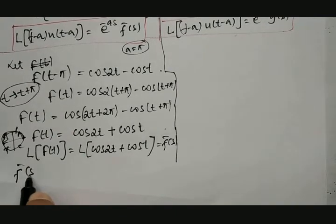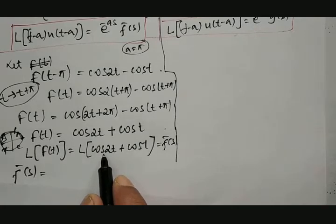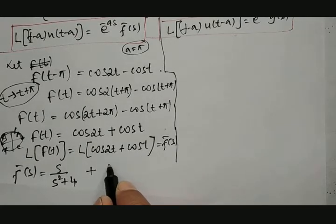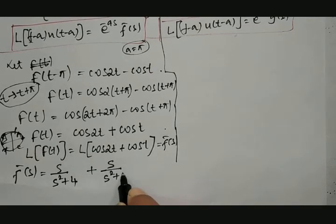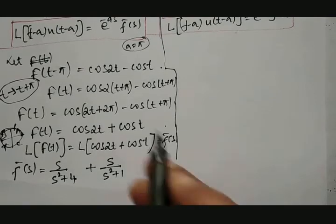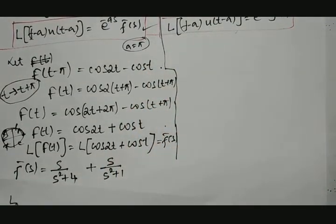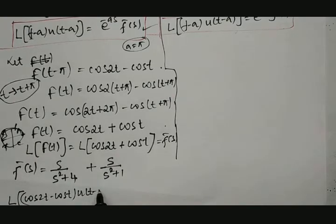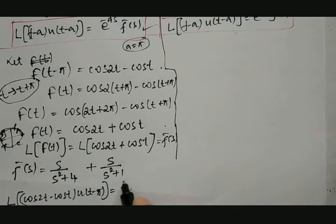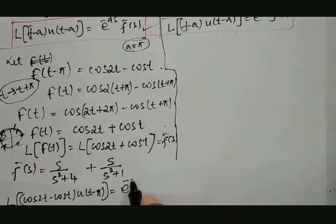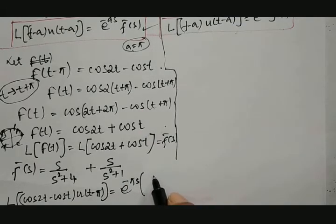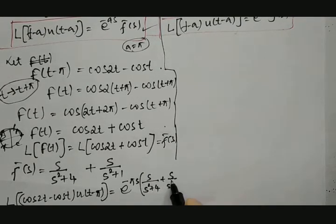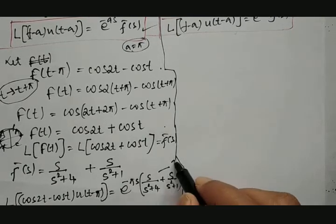Therefore, F̄(s) = s/(s² + 4) + s/(s² + 1). As per the property, L{(cos 2t − cos t)·u(t − π)} = e^(−πs)·F̄(s) = e^(−πs)·[s/(s² + 4) + s/(s² + 1)]. This is equation 3.